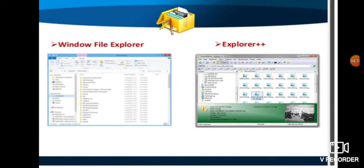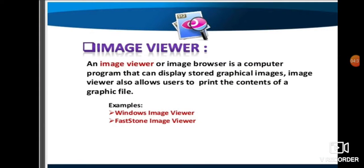As shown in the image, two examples are Windows File Explorer and Explorer++, used for file management activities. Files are stored in folders, folders are stored in directories, and directories are stored in different drives such as C, D, and E.